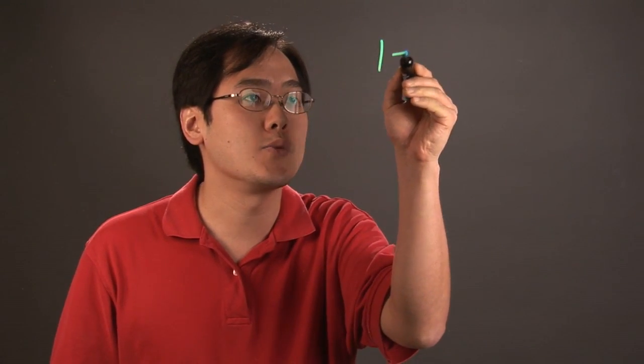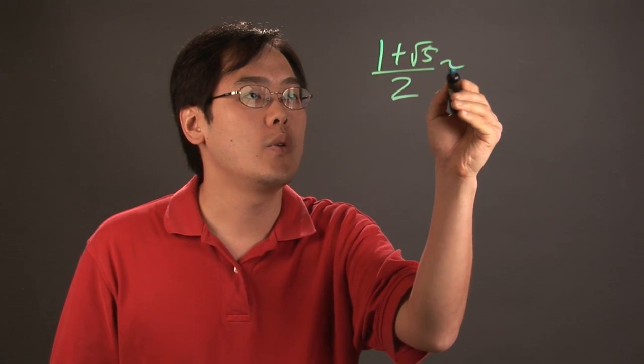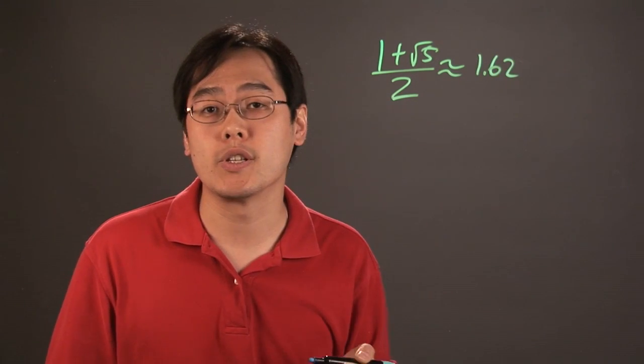Hi, I'm Jimmy Chang, and we're here to talk about the golden ratio in engineering. The golden ratio is a number that is 1 plus square root of 5 over 2, which is approximately 1.62.